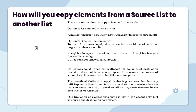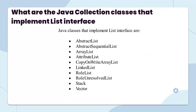Collections.copy does not reallocate the capacity of the destination list. If it does not have enough space to contain all elements of the source list, it throws IndexOutOfBoundsException — it will not grow. The benefit of Collections.copy is that it guarantees the copy will happen in linear time. It is also good for scenarios when we want to reuse the array instead of allocating more memory. One limitation of Collections.copy is that it can accept only a List as source and destination parameters.